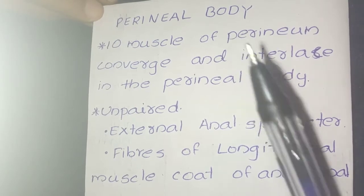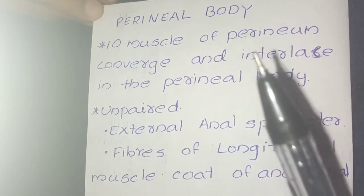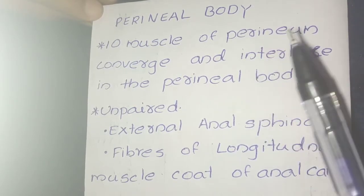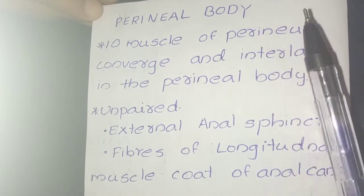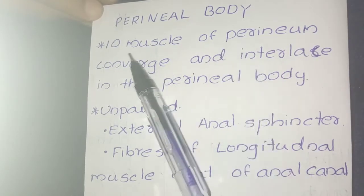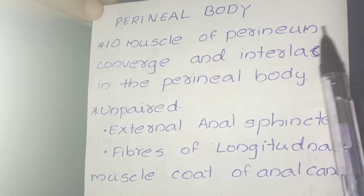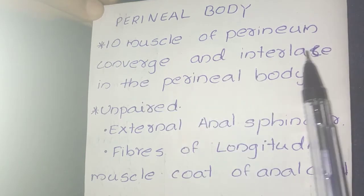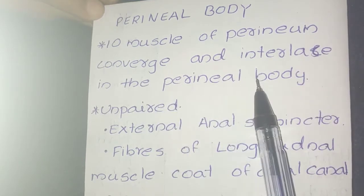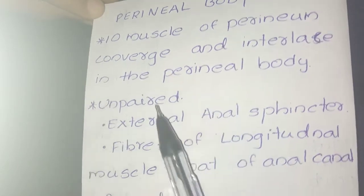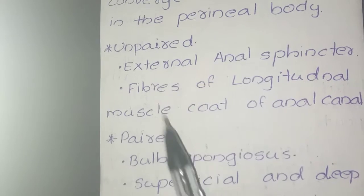The perineal body is a central point of the perineum and it is formed of ten muscles. The ten muscles of the perineum converge and interleave in the perineal body, and they include unpaired and paired muscles.